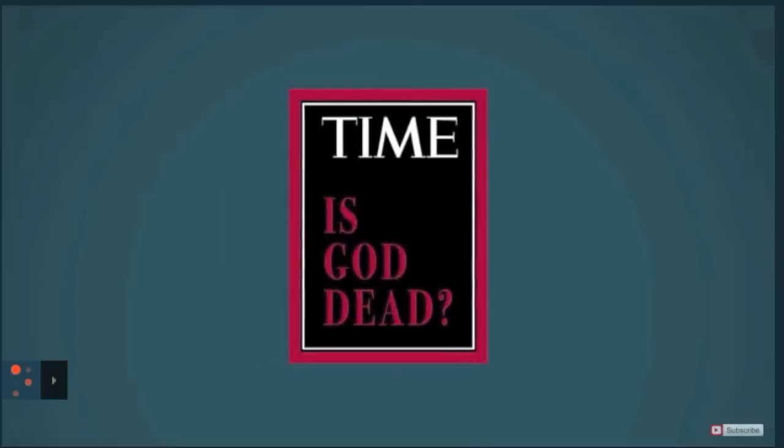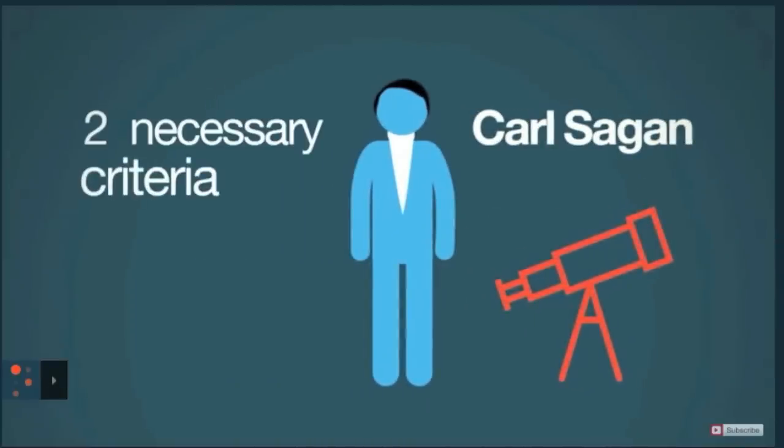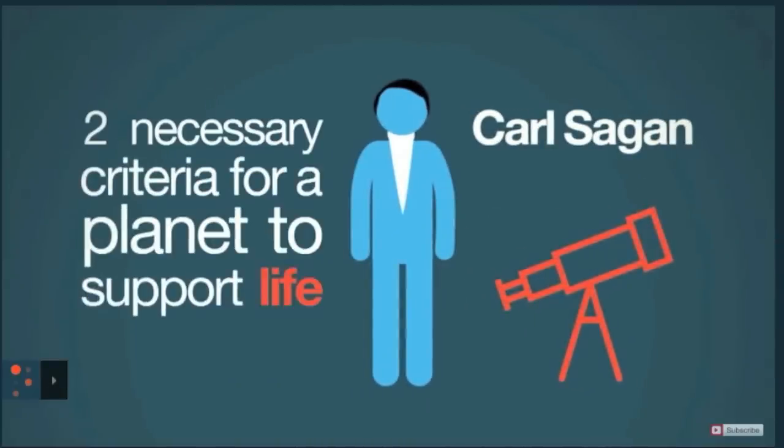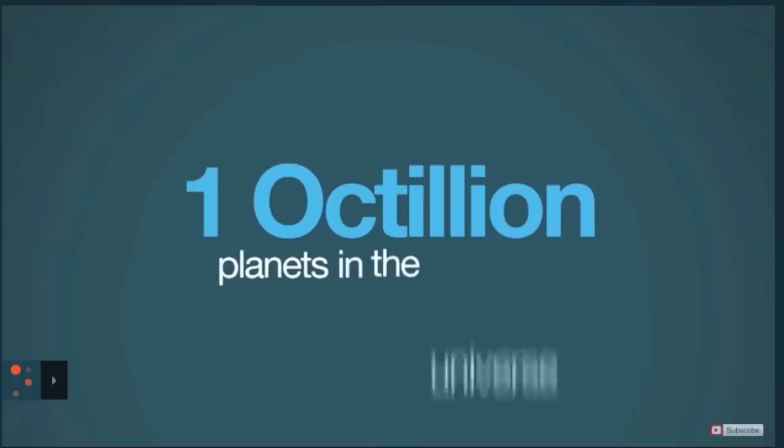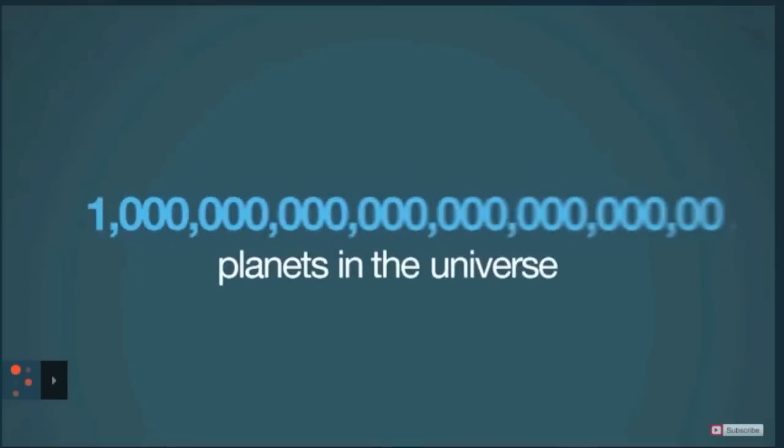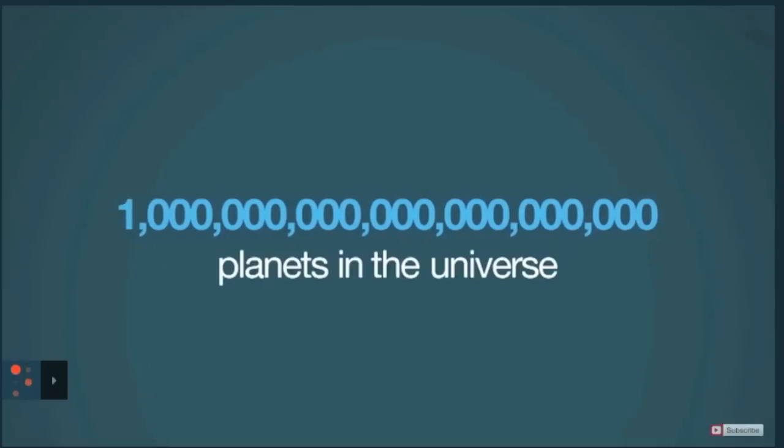The same year Time featured its now famous headline, the astronomer Carl Sagan announced that there were two necessary criteria for a planet to support life: the right kind of star and a planet the right distance from that star. Given the roughly octillion planets in the universe, that's one followed by 24 zeros, there should have been about septillion planets, that's one followed by 21 zeros, capable of supporting life. With such spectacular odds, scientists were optimistic that the search for extraterrestrial intelligence, known by its initials SETI, an ambitious project launched in the 1960s, was sure to turn up something soon.